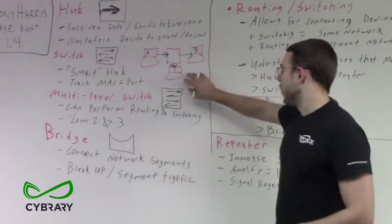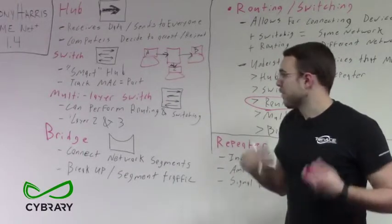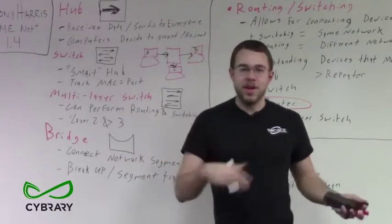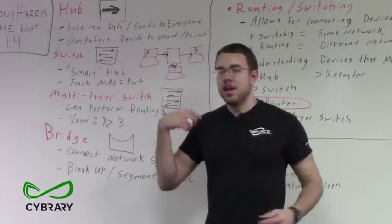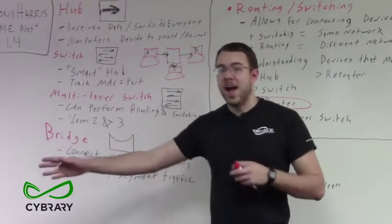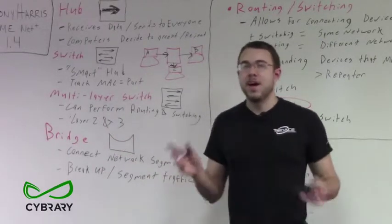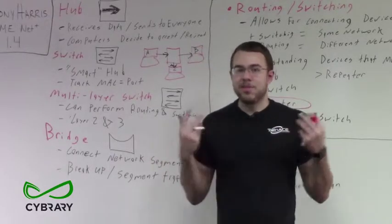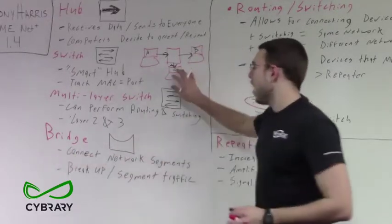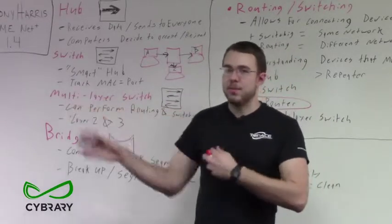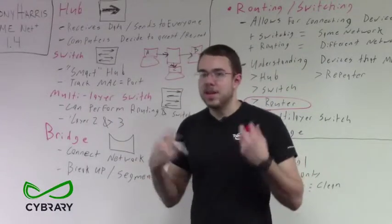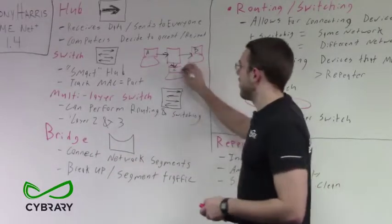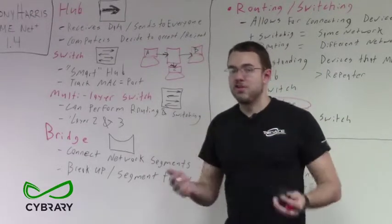Hubs also perform functions similar to a repeater. Repeaters take a signal and change it in some way so it can keep going down the same path — they don't change the packet or the data, they just clean it up or make it stronger so it can keep going down the cable. Hubs do the same thing except they push data in multiple directions. A hub may clean up or amplify the signal, but it sends it to everybody connected to it except the port that originally sent the packet.